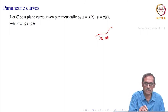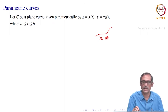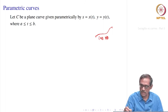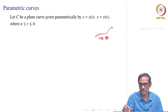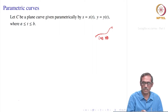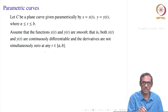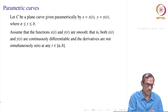Let us assume that C is a plane curve given parametrically by x equal to x of t, y equal to y of t, both functions over the interval a to b. We also assume that as time proceeds, the curve does not stop anywhere — that is, the derivatives are not simultaneously zero. We assume that x of t and y of t are smooth: continuously differentiable, with derivatives not simultaneously zero at any t in the closed interval [a, b].